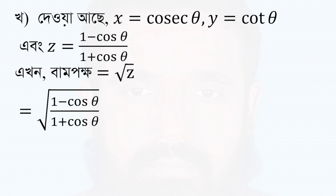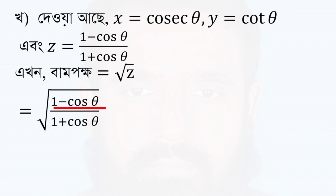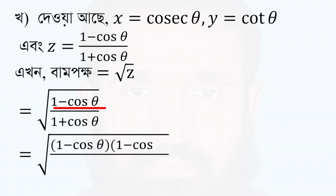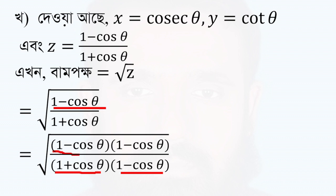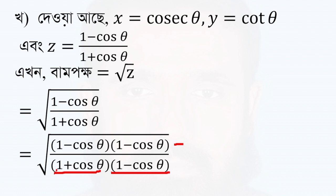So if you have 1 minus cos theta, then you will have 1 minus cos theta. Here 1 plus cos theta is equal to 1 minus cos theta. Using the identity (A + B)(A - B) = A² minus B².